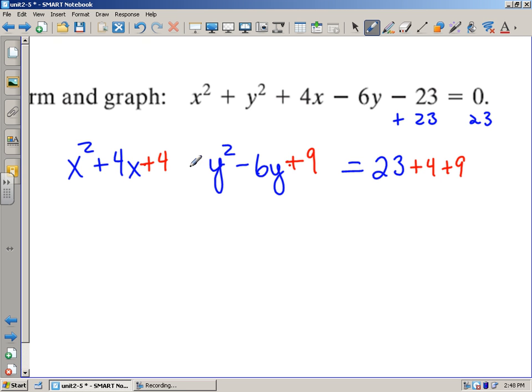When I factor this left side, I'm going to get x plus 2 squared plus y minus 3 squared equals 23 plus 4 plus 9. I'm pretty sure that's 36. Now, 36, that's r squared, right? So r is 6. My center, I look at my h and k values. My center is going to be at negative 2 and 3.